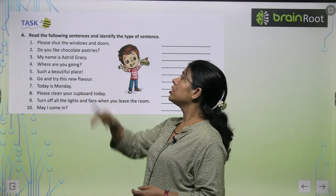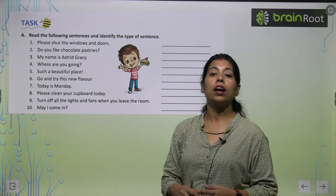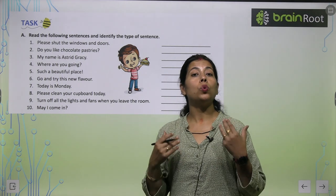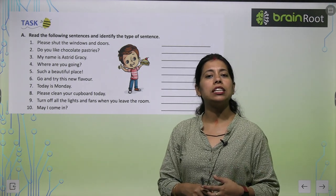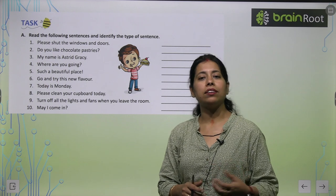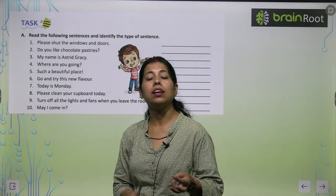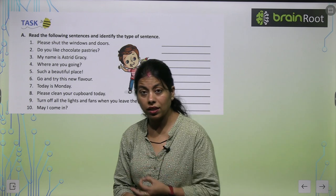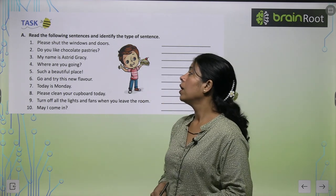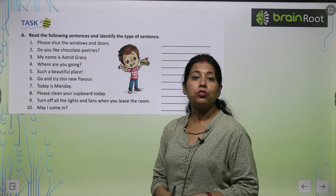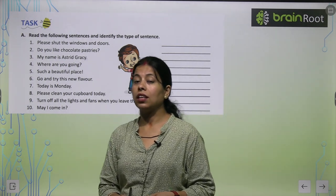For example: 'Please shut the window and doors.' The word 'please' indicates it is a command — so it is an imperative sentence. Now, 'Do you like chocolate pastries?' — here we are asking a question, so it is an interrogative sentence.